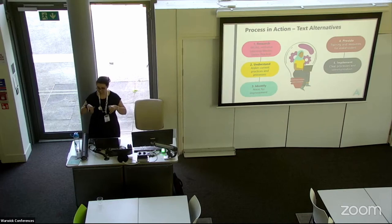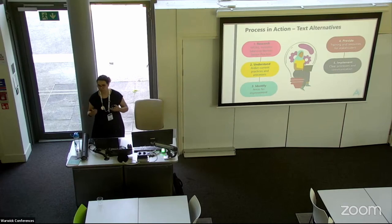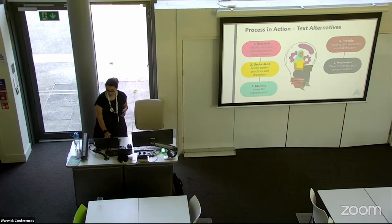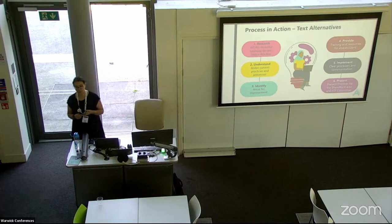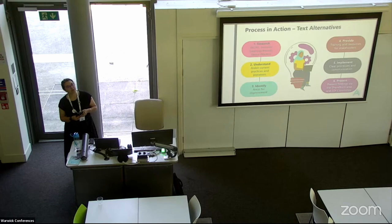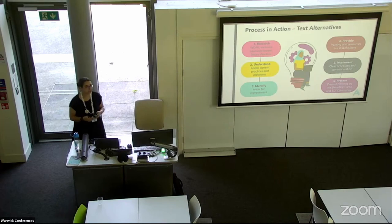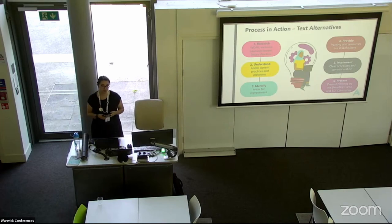Number five is implement — implementing a clear process on alternative text and image description and how it can be embedded into the development process. This might be in the onboarding of subject matter experts, new people, and training and documentation. And finally, number six is present — presenting findings to the wider community. That might go out on our SharePoint site, or through our governance structure where we've got student representation, to get that feedback so we can make changes in the next block.